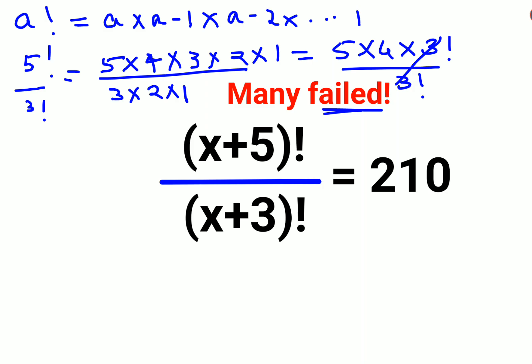The reason for explaining this is because here also, (x+5) factorial could be written as (x+5) into (x+4) into (x+3) factorial, divided by (x+3) factorial.